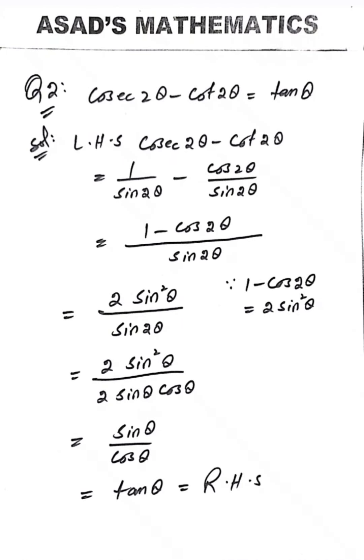Our next question is: csc 2θ minus cos 2θ divided by sin 2θ equals tan θ. Taking the left hand side, cosecant is the reciprocal of sin. So we have 1 over sin 2θ minus cos 2θ divided by sin 2θ. Taking LCM as sin 2θ, and applying the formula 1 minus cos 2θ equals 2 sin² θ to the numerator.